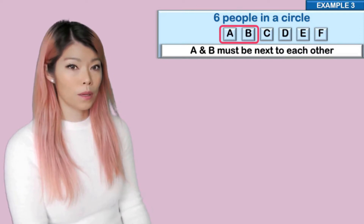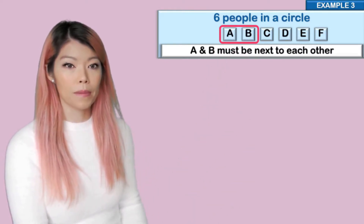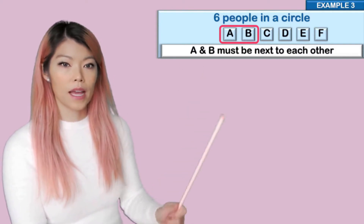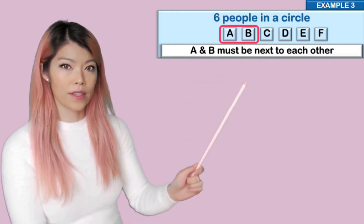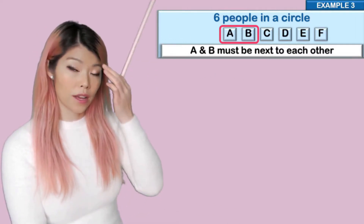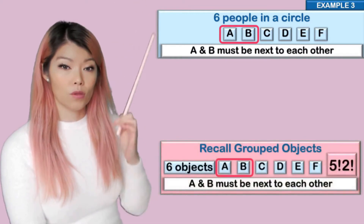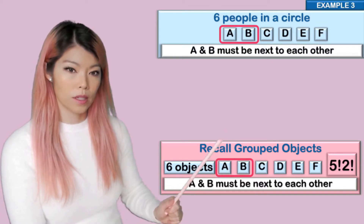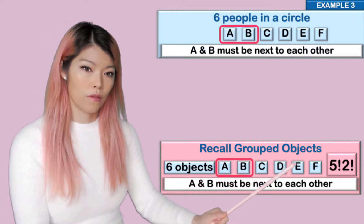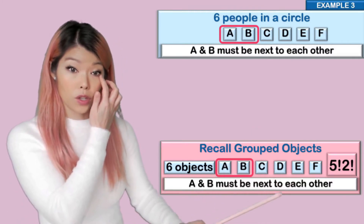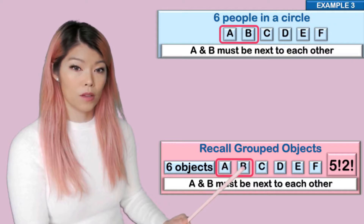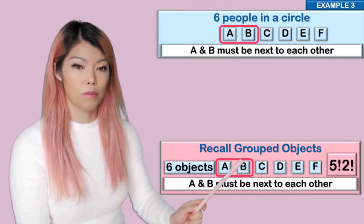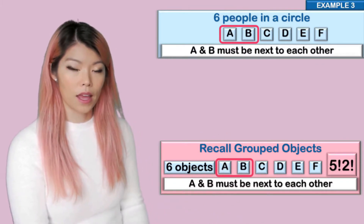Example three: if you had six people in a circle and two of them, A and B, must be sitting next to each other, how many different arrangements can there be? What does A and B together mean? If you haven't seen the video about restrictions, please watch that first. A and B next to each other means we treat them as one person, giving us five groups. We rearrange those five factorial ways, and we know that A and B could also be arranged as B and A, so we multiply by two factorial.